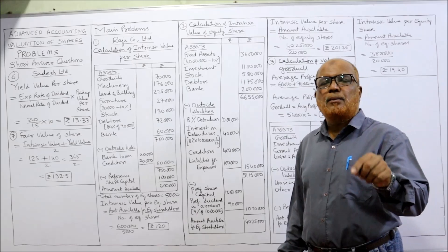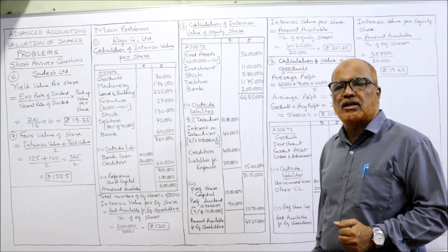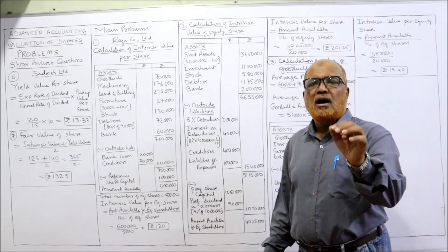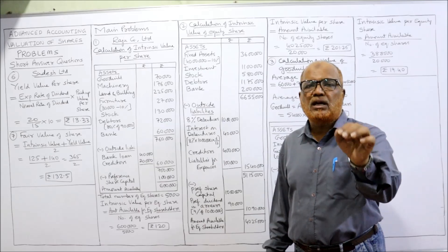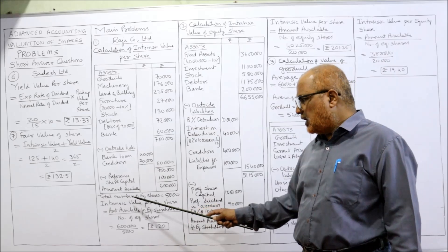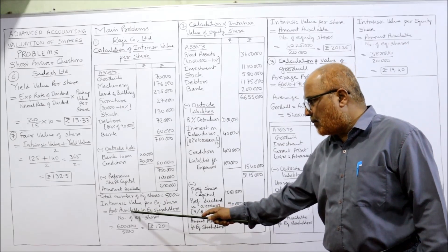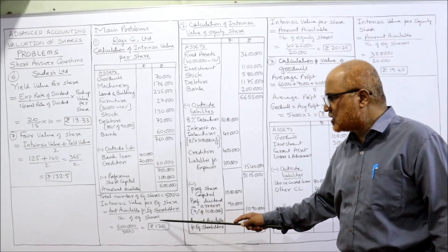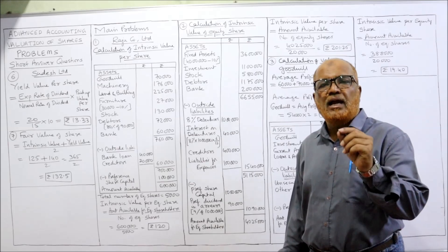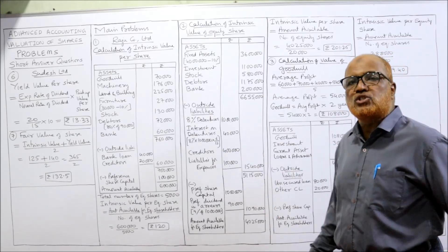From ₹7,00,000, subtract the preference share capital. In earlier problems we never came across preference share capital, but now it is given so we deduct it. That leaves ₹6,00,000 as the amount available for equity shareholders. ₹6,00,000 divided by 5,000 shares = ₹120. So ₹120 is the intrinsic value per equity share. This is the end of the first main problem.